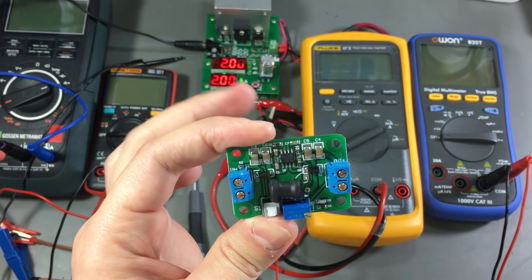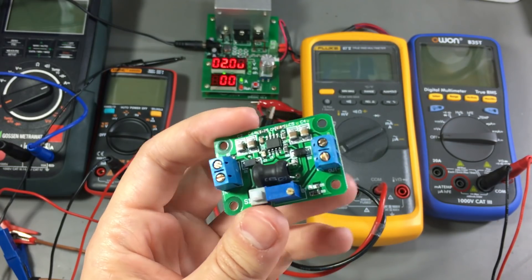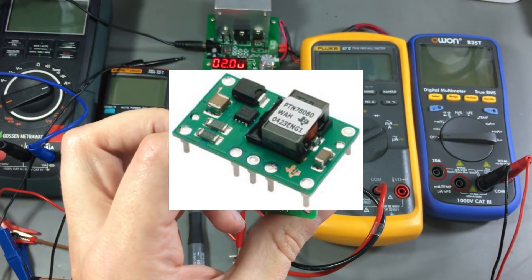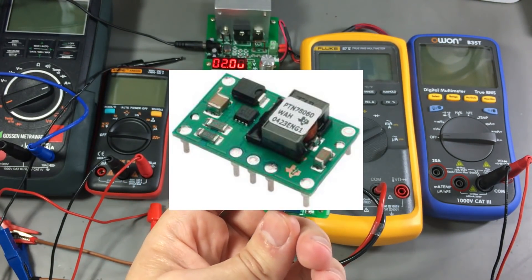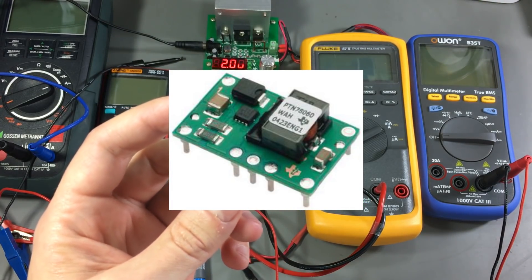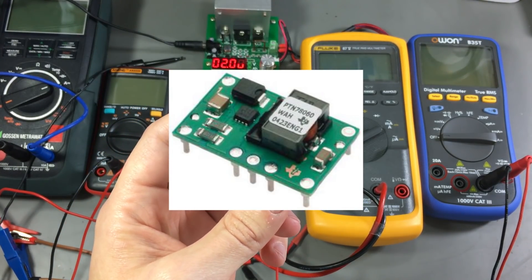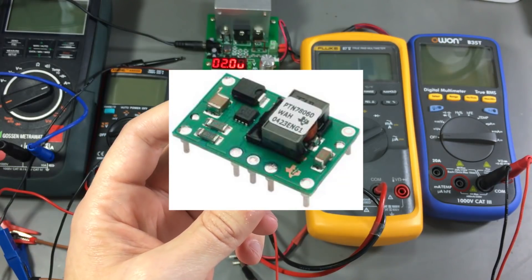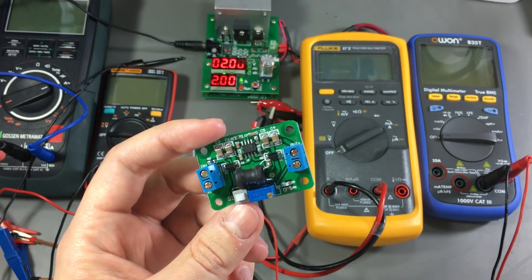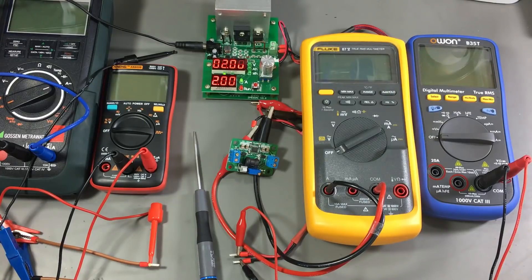If you really need a higher efficiency module, you need to check out the off-the-shelf DC to DC converters from big manufacturer names like Texas Instruments, because those really deliver as advertised. So I hope this was an interesting video to watch.